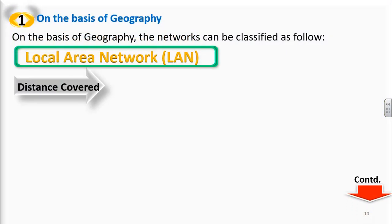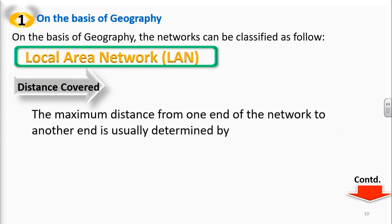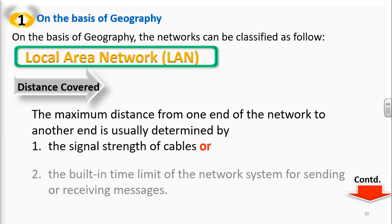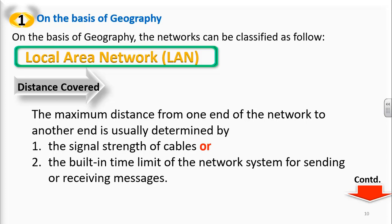Regarding distance covered: what shall be the distance that makes a local area network? The maximum distance from one end of the network to the other is usually determined by two things: first, the signal strength of the cable, and second, the built-in time limit of the network system for sending or receiving a message. If the cable's signal strength is very strong, we can send the message to a distant point; if weak, the message cannot reach a distant point. Distance covered is determined by these two points.